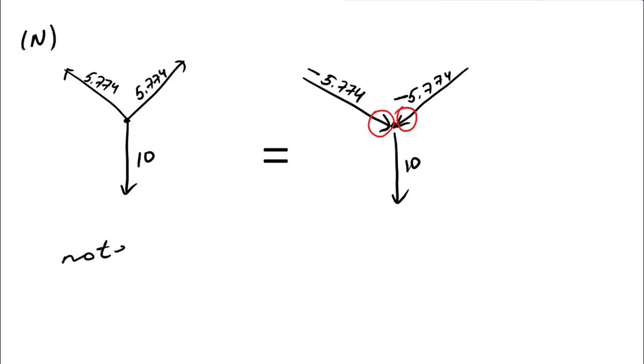Note that you can change direction of any vector if you write negative sign in front of it. But be careful, magnitude of vector should be same, only the direction changes.